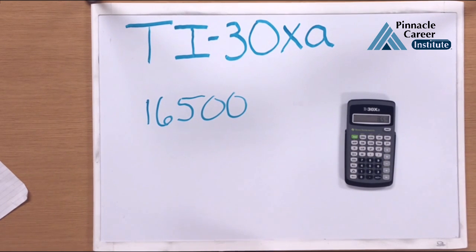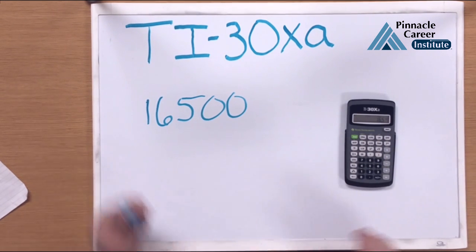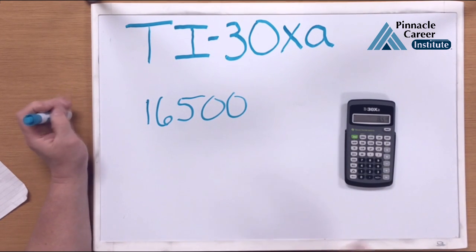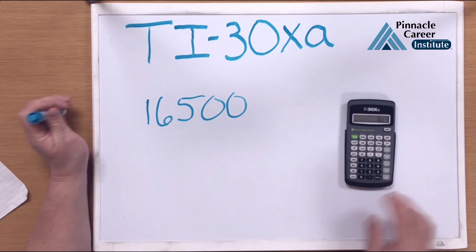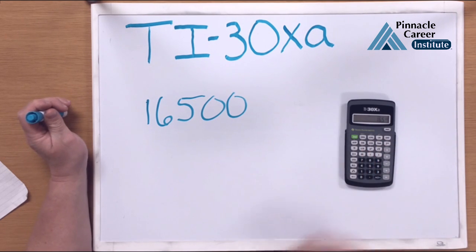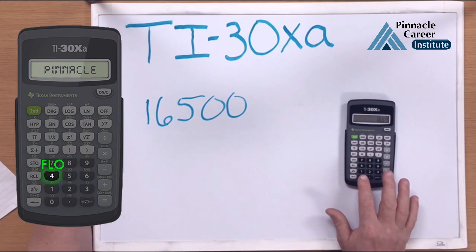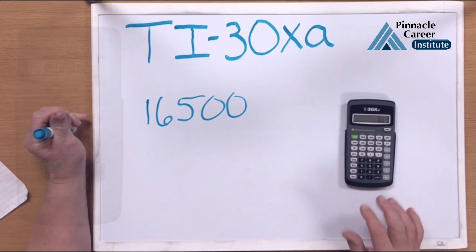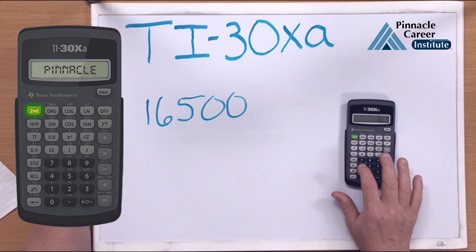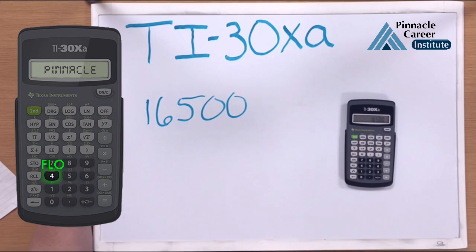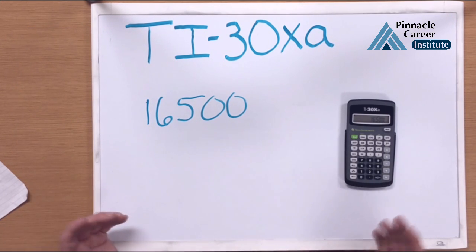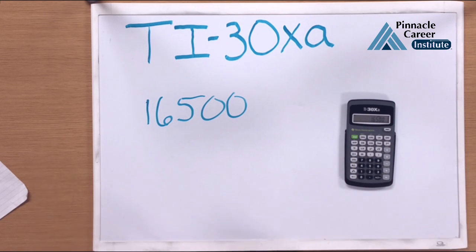This is now in engineering notation, and it's set up for you to put the prefixes in, which you're going to learn this week. If I need to put a number back into regular number form, all you have to do is hit the second button and the 4. If you look above the 4, you'll see FLO, which stands for float — meaning regular number. Hit your second button and 4 and we're back to 16,500. That is how you use the calculator to convert numbers from normal numbers into scientific and engineering notation.